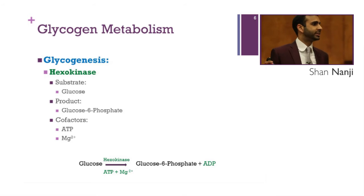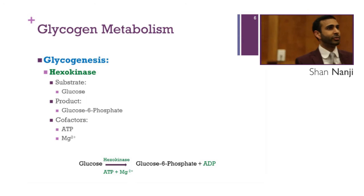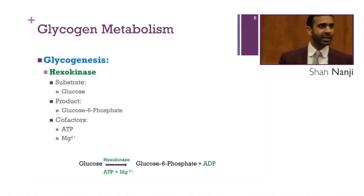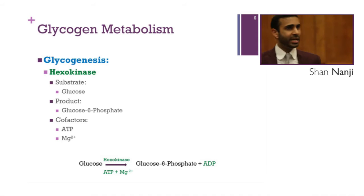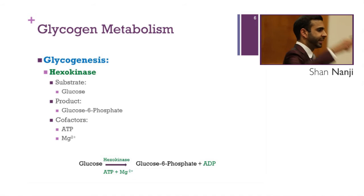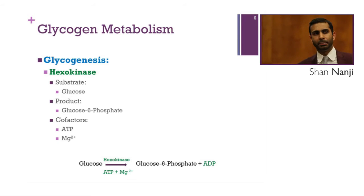The first enzyme is hexokinase. Hexokinase is everywhere, but glucokinase is only in the liver. For hexokinase, the substrate is glucose, the product is glucose-6-phosphate, and the cofactors are ATP and magnesium.